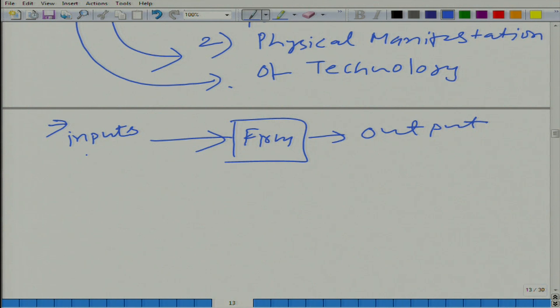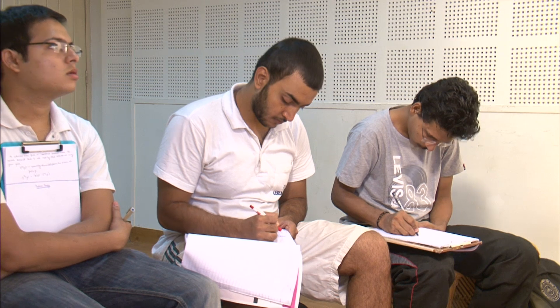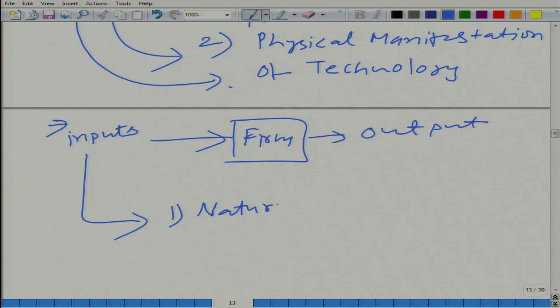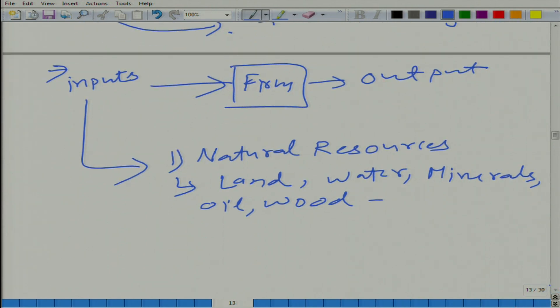Now, can you name some different kinds of inputs? Not just the particular input, the different classifications of inputs that you can think of? Labor, capital - that is very traditional. Raw material. So let us start with the raw material. Rather than saying raw material, we will say natural resources. What we will have in the natural resources: land - it is not a raw material but it is one of the natural resources that we use to produce. Land, water, minerals, wood - you can think of many more natural resources provided by nature typically.